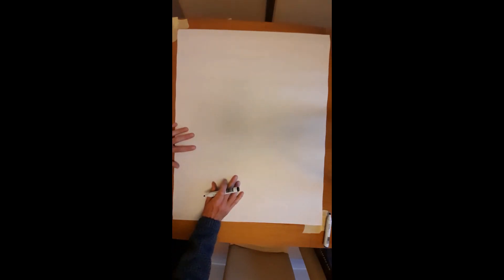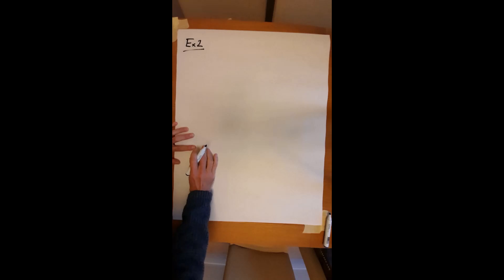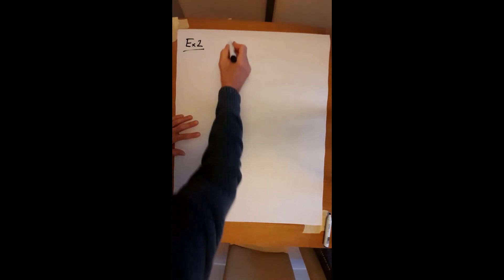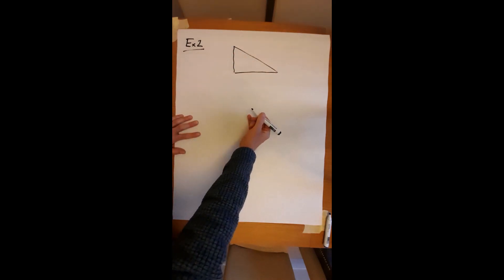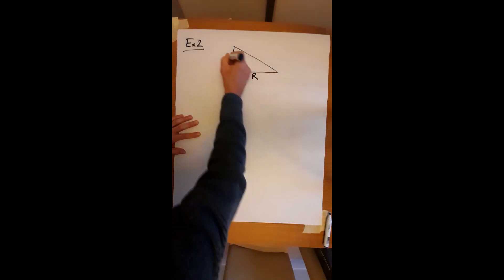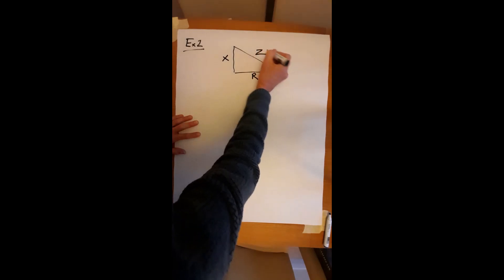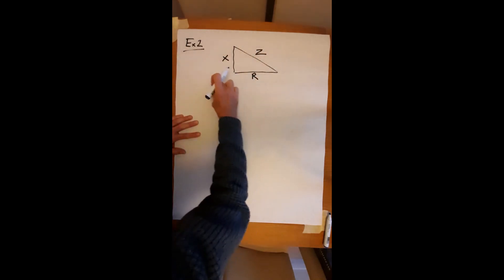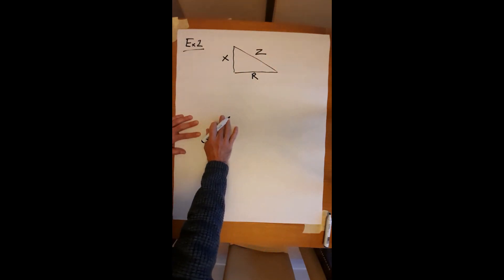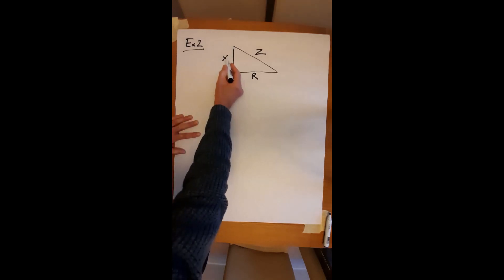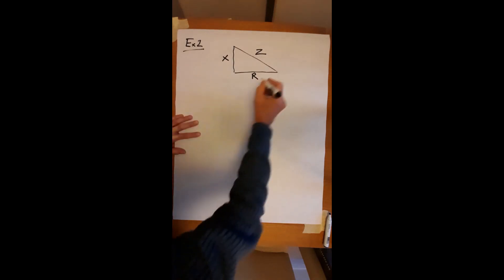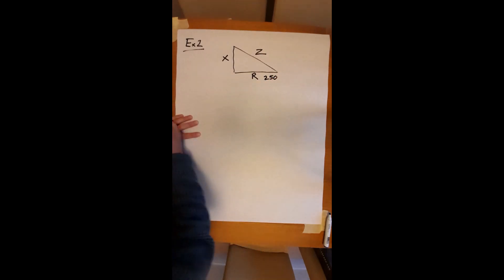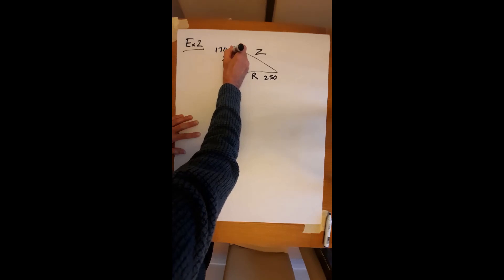So let's do example two. I've sketched out a triangle, not to scale, and I've given you some numbers to deal with. I've used particular letters on this occasion. I've called this R, X, and Z. I've done that deliberately. These letters and the formula we'll write to correspond to that become very important in the following weeks. So X, Z, and R: resistance, reactance, and impedance. I've given you some numbers: 250 for R, 170 for X, and these units are in ohms. And I've asked for you to find Z.